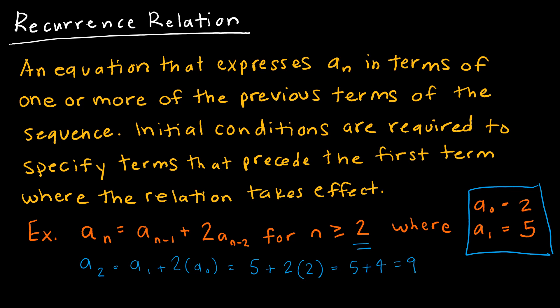If I then want to find the next term, that is going to be a sub two plus two times a sub one. I'll plug in those values: a sub two I just found was nine, two times a sub one is two times five. So that's nine plus ten, or 19. And I would continue that process.